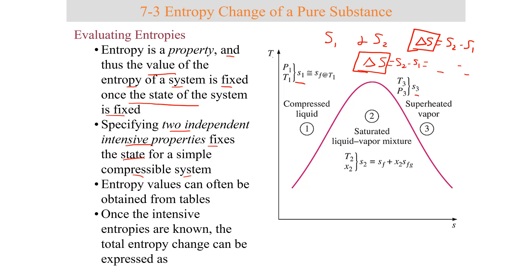We're going to be dealing a lot with things called TS diagrams — temperature on the y-axis, entropy on the x-axis — and you would have a saturation curve, much like a T-nu diagram from earlier chapters. This would be the liquid-vapor mixture region, the saturated vapor region, and the compressed liquid region.